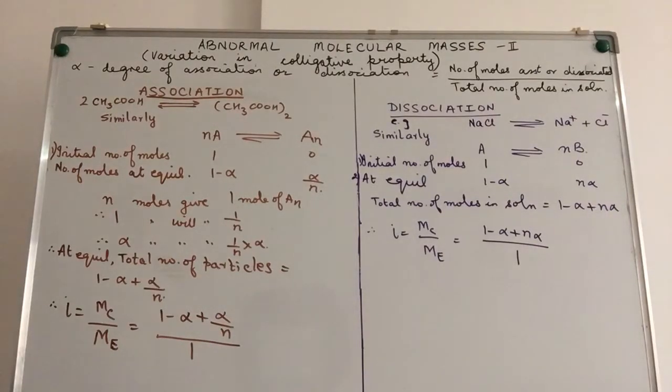Welcome back. Coming to Abnormal Molecular Masses Part 2, where we are going to extend the theoretical learning in order to be able to handle practical problems and practical numericals based on Abnormal Molecular Masses concept. Here we are going to introduce a new term denoted by alpha called as the degree of dissociation or association in solution.